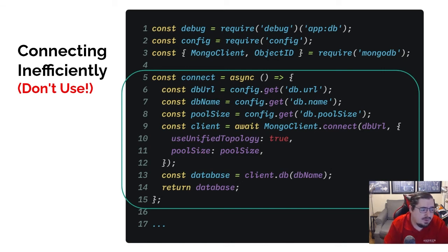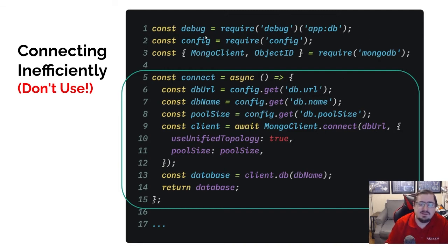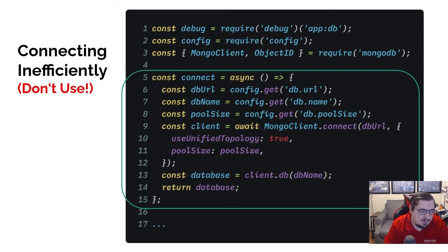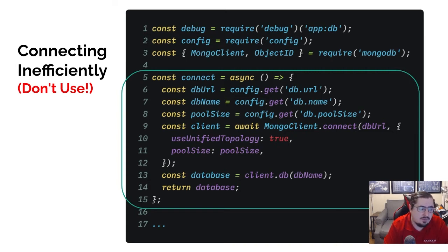Let's talk about how we build the database module. We've figured out the configuration part, now let's lay the groundwork. To start building that out, we need a few dependencies: debug as normal — I'm going to require the debug module and set my channel to app:db so that anything logged goes to that channel. We bring in the config module to access the configuration options we just set up. Then I also want to bring in MongoDB — this time I'm actually bringing in two pieces: the MongoClient we had earlier, but also ObjectId, which will let us deal with object IDs.